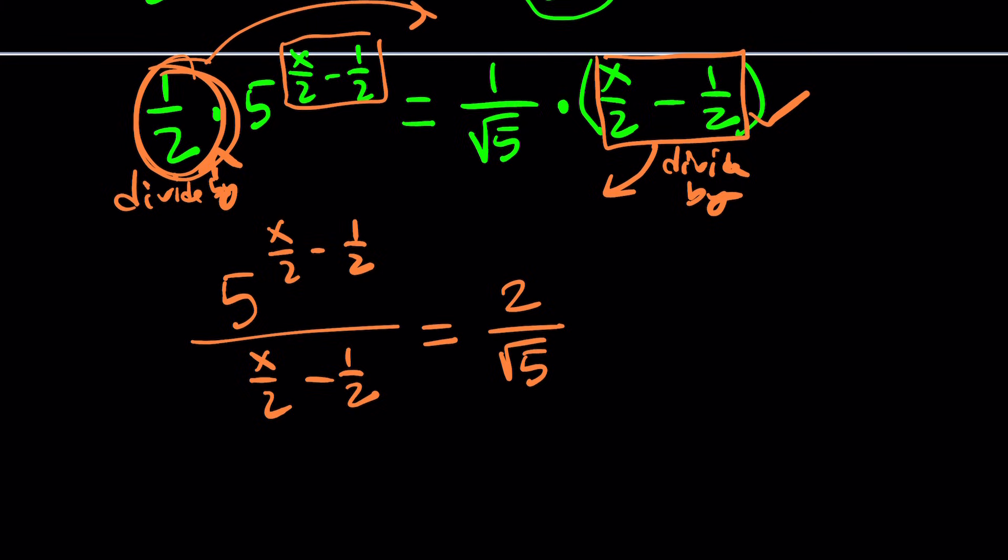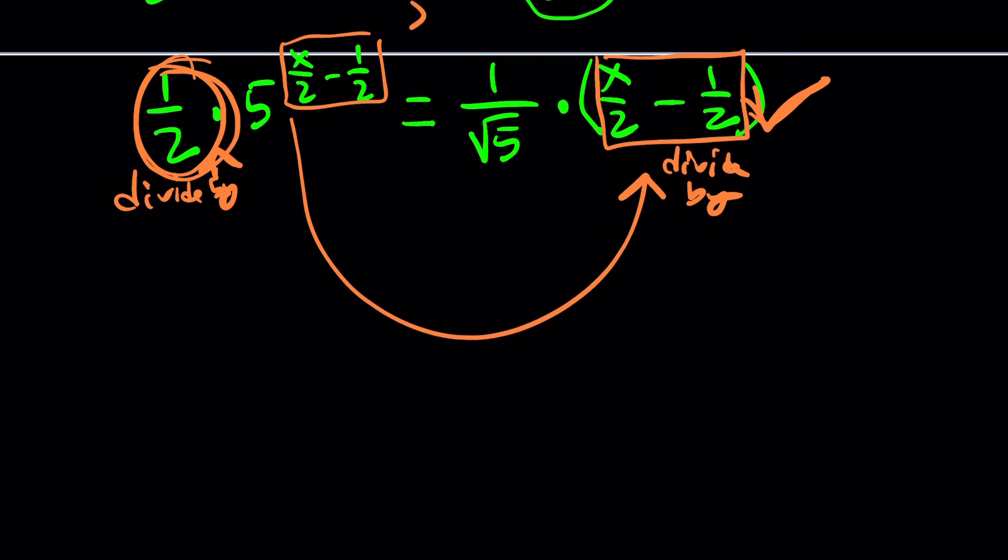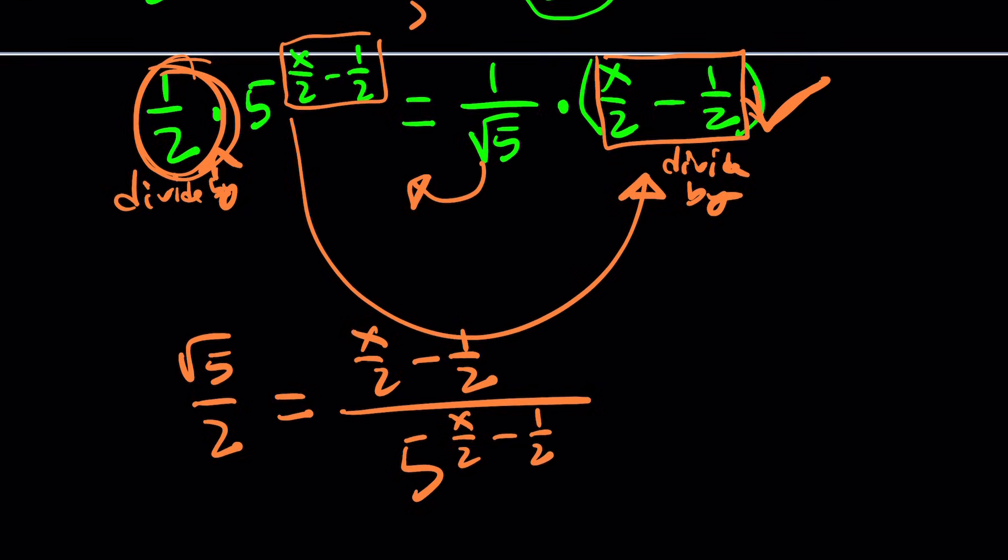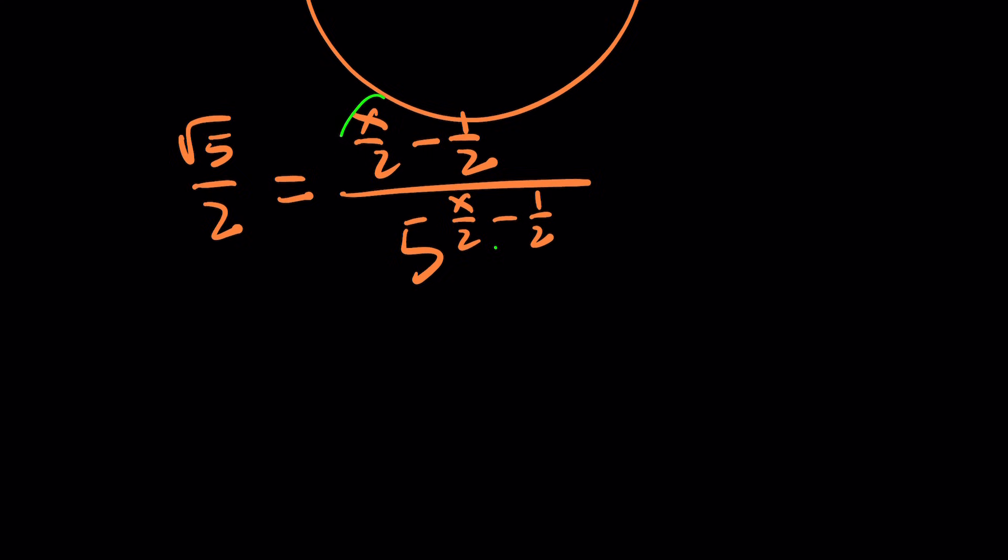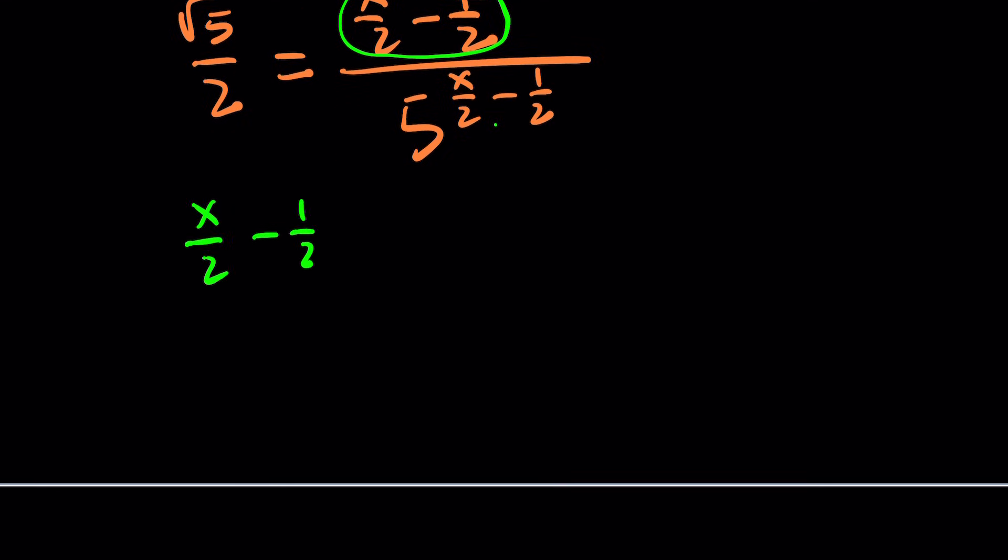So let's go ahead and put this in a more meaningful form now. And also, one thing to keep in mind, this wasn't my intention. So let me go back a little bit. Let me back up. I don't think I want to do it this way. I actually want to bring this over this way. So I should probably change my arrows and kind of go like this. Here's what I want to do. I want to keep this here on the right hand side. So I'm going to divide by this. And I'm going to multiply by or divide by that. So it's going to look like this. Root 5 over 2 equals x over 2 minus 1 half divided by 5 to the power x over 2 minus 1 half.